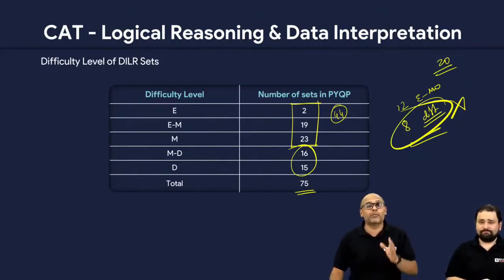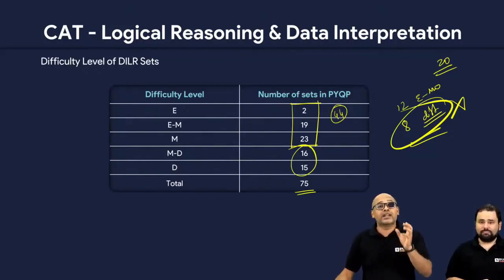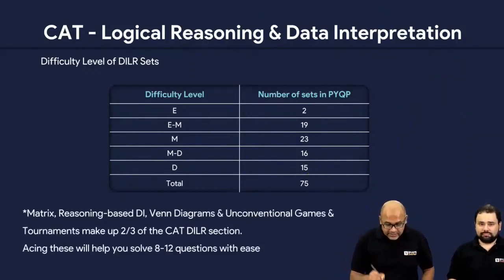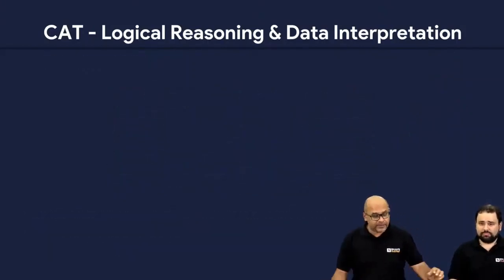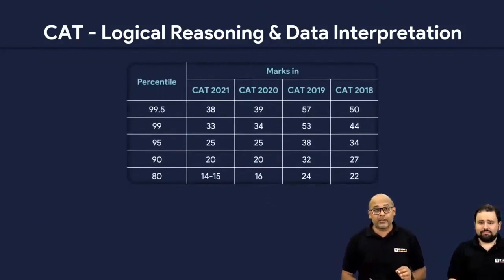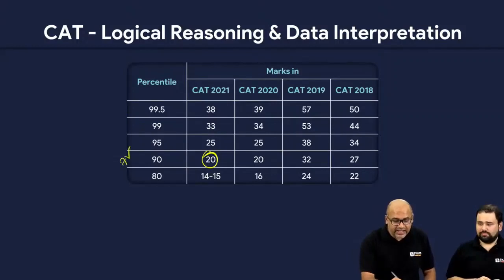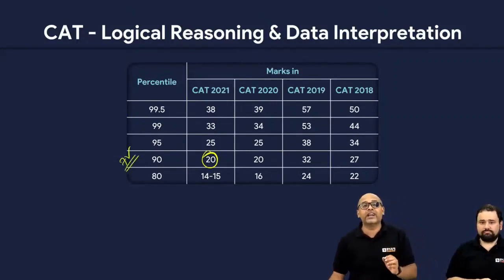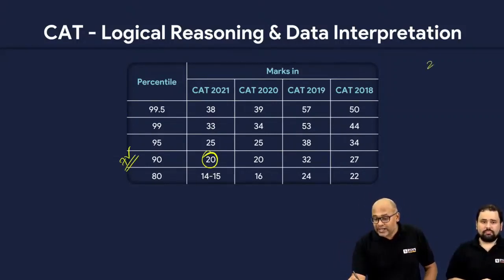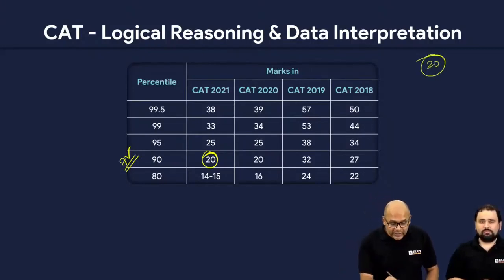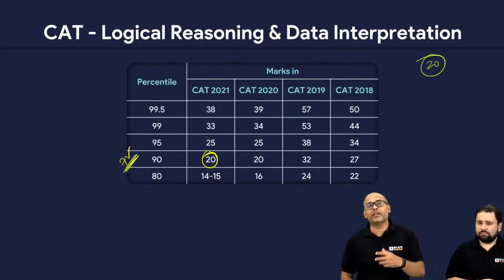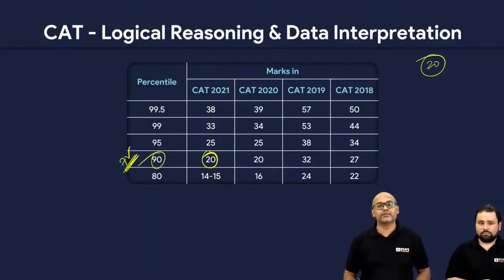I'm going to talk about mock strategy and timelines as well — please follow that. The next thing is percentile. In a 20-question paper, if you get around 6 or 7 correct — seven corrects with probably one mistake — so 8 attempts across two sets, you are at your 90 percentile. That's all your target is. Please keep this in mind.